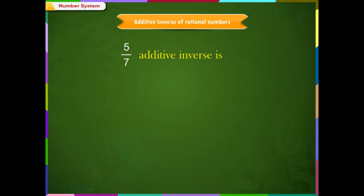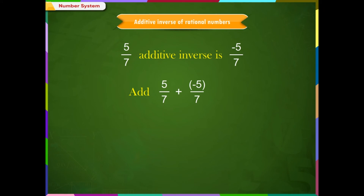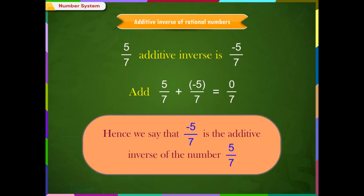For example, consider the rational number 5/7. The additive inverse of 5/7 is -5/7. According to the additive inverse property, the sum of 5/7 and its additive inverse must be 0. So we add the two rational numbers: 5/7 + (-5/7) = (5 + (-5))/7 = 0/7 = 0. Hence, -5/7 is the additive inverse of 5/7.